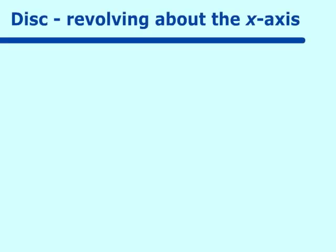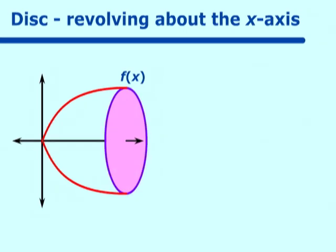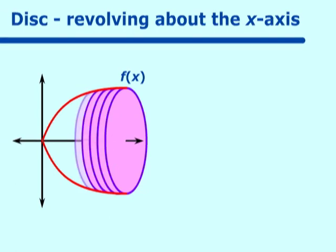Let's talk about discs revolving around the x-axis. Let's get a function f of x and revolve it around the x-axis. Once we do that, we have something that looks like this. Practice these until you are comfortable drawing these functions and making them look three-dimensional. In the last lesson, you sliced all your objects up, and we're going to do that again here. If we slice this up, we see that we have many, many slices, and the area of each of those slices is nothing more than a circle.